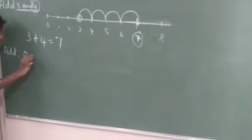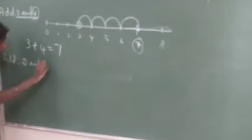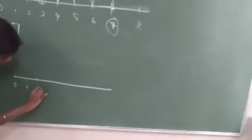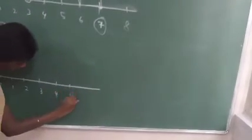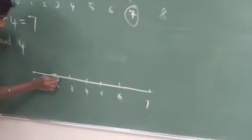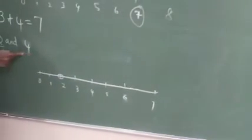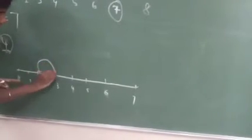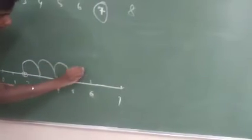Let us see another example: add 2 and 4. Draw a number line starting from 0: 0, 1, 2, 3, 4, 5, 6, 7. Start from 2 and mark a point there. Since I am adding 4, I make 4 jumps to the right — first jump, second jump, third jump, fourth jump. After 4 jumps I reach 6. So 2 plus 4 equals 6.